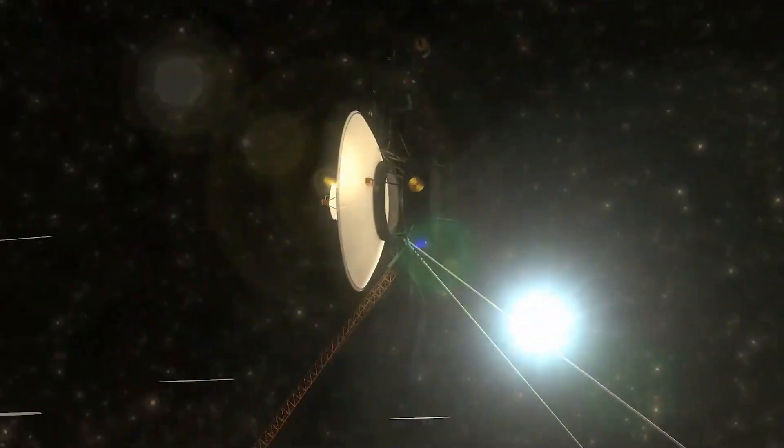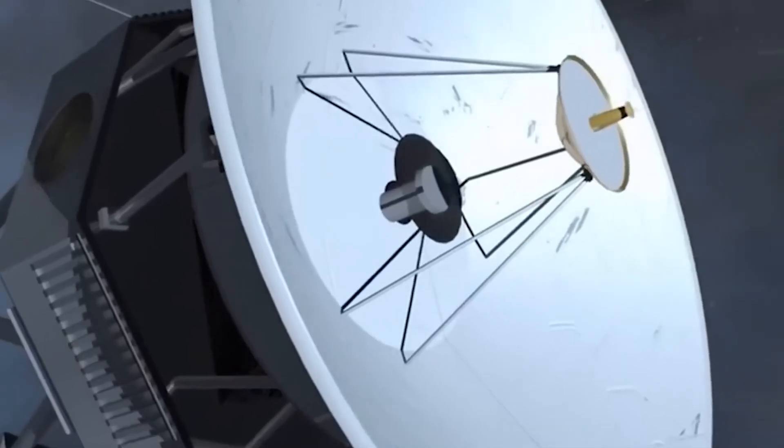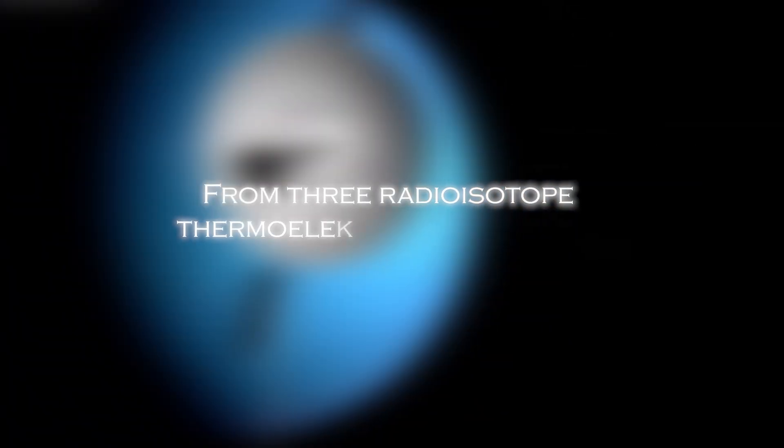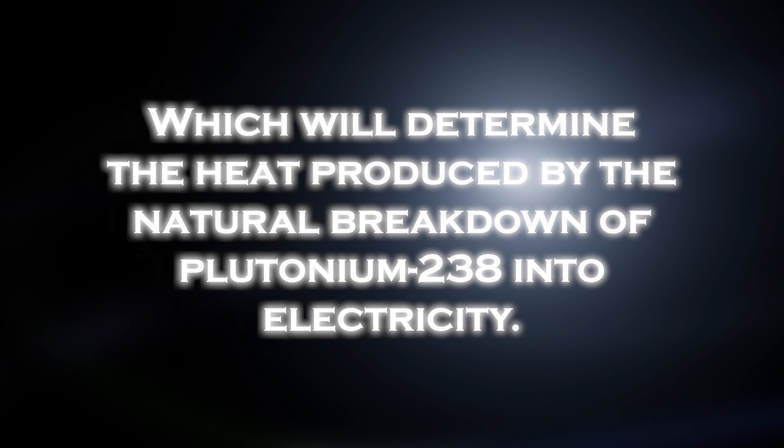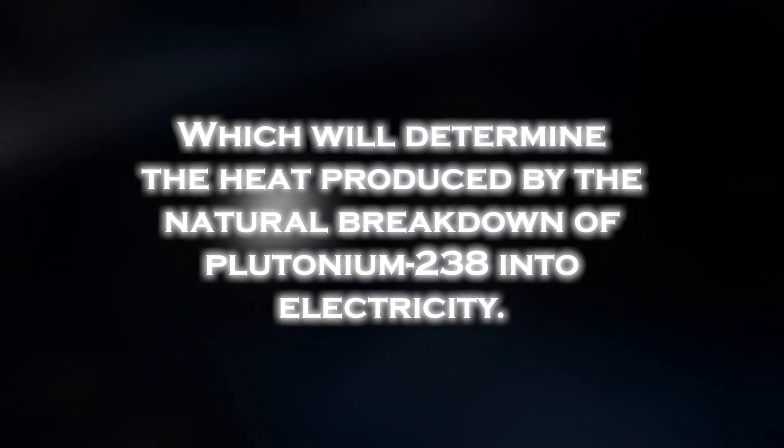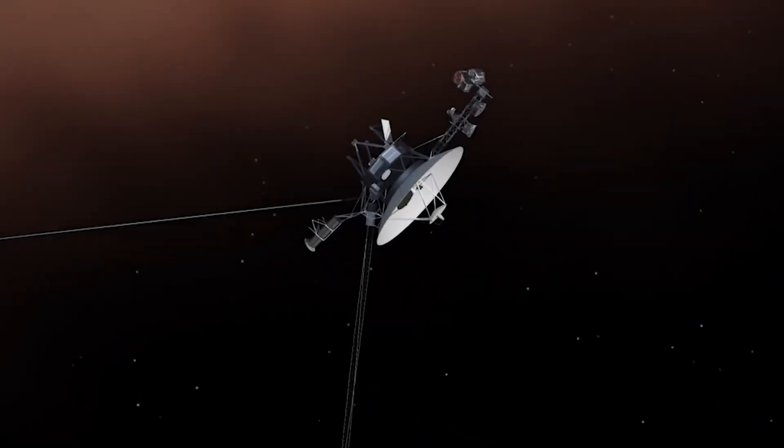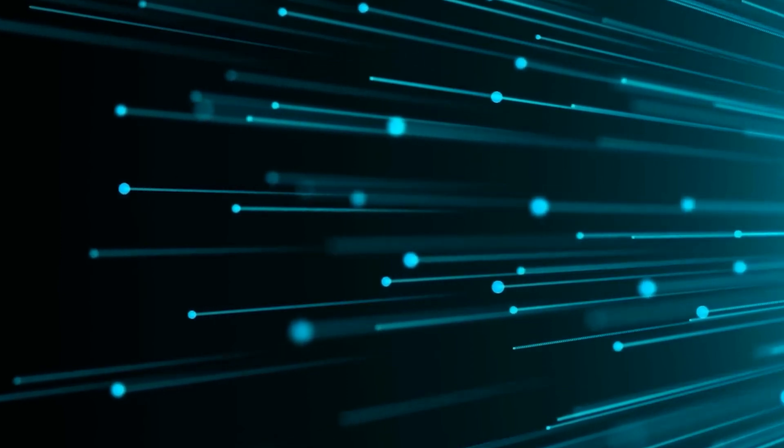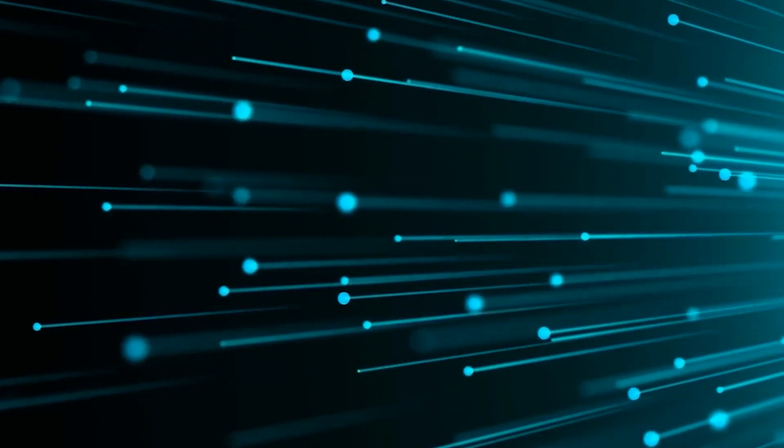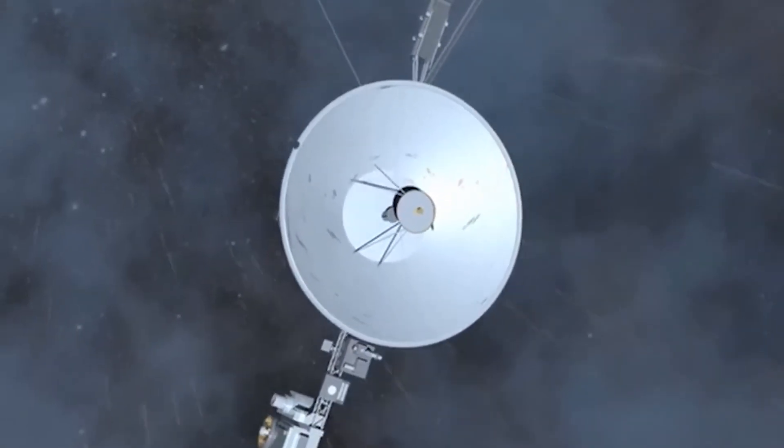As the probe moved farther from the sun, the amount of sunlight available to power its instruments and systems significantly decreased. The spacecraft's power is generated primarily from three radioisotope thermoelectric generators, which convert the heat produced by the natural breakdown of plutonium-238 into electricity. As the heat output has decreased over time, the available power has decreased, affecting the operation of several onboard systems, including scientific instruments, data transmission, and communications.